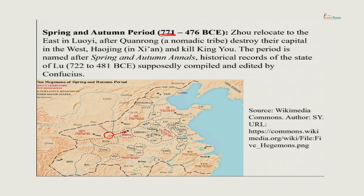The name Spring and Autumn comes from the famous work, the Spring and Autumn Annals, which are historical records of the state of Lou. Confucius belonged to that state and served in it for many years. It is a record of the entire history of this state from 722 to 481 BCE, and it is supposedly compiled and edited by Confucius.